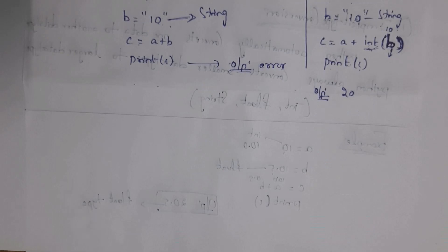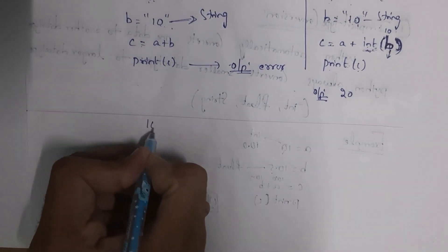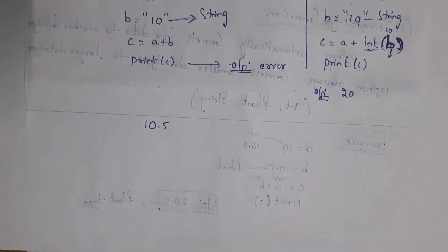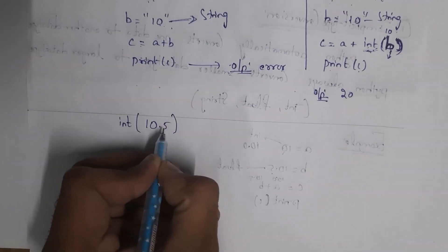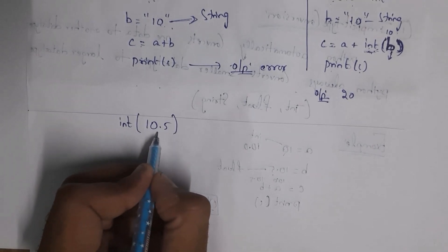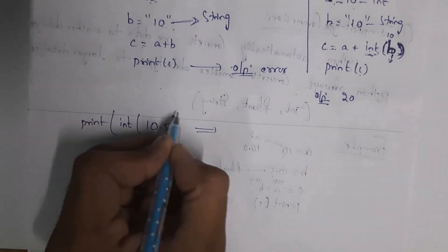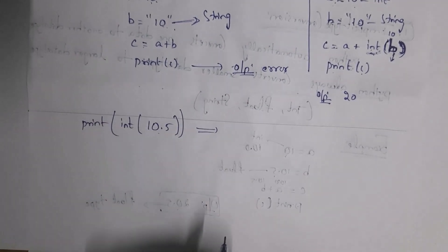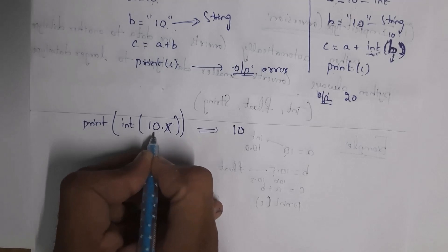For example, to convert a float value to an integer, consider 10.5. You can convert it using the int() function: int(10.5). It will convert 10.5 to integer 10, dropping the decimal part. So print(int(10.5)) gives output 10, because it removes the fractional part and displays only the integer value.